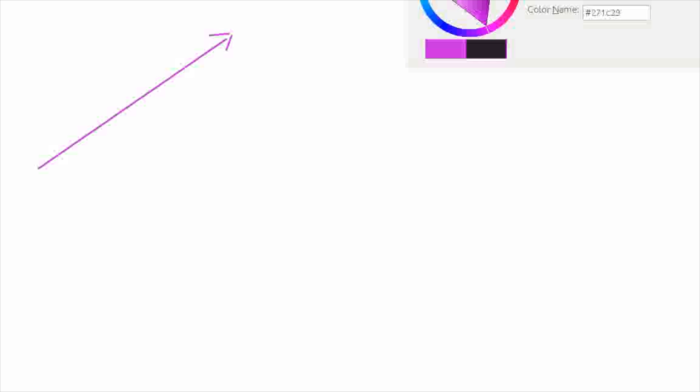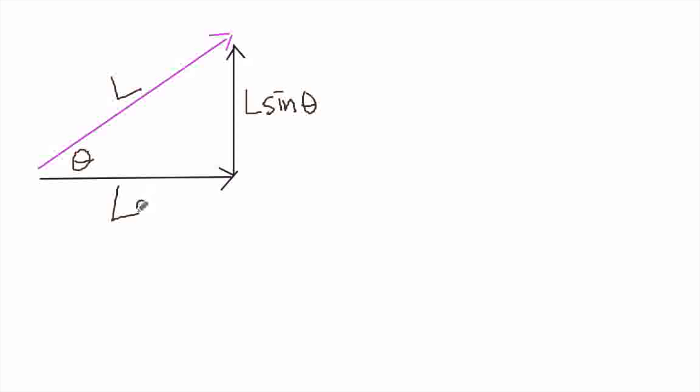We used that, and we learned a little trig to do that, not too much. But if this one has a length L, and this is an angle theta, then the length of this piece, this vertical piece, we said was L sine theta, the length of this one was L cosine theta.